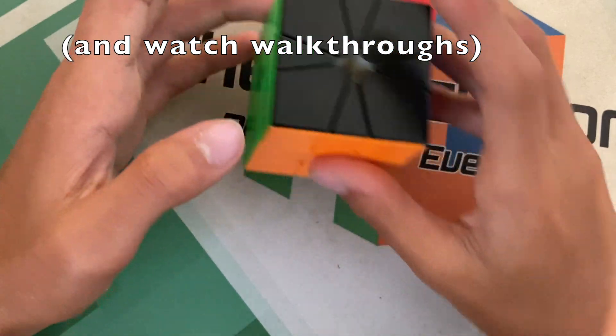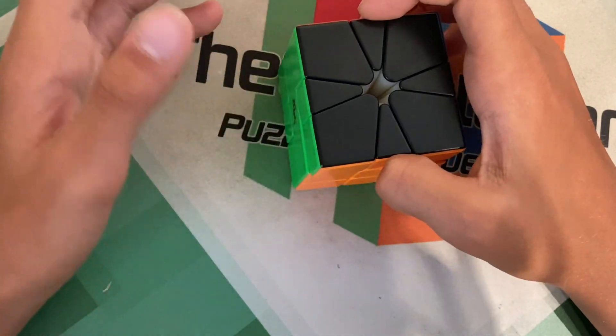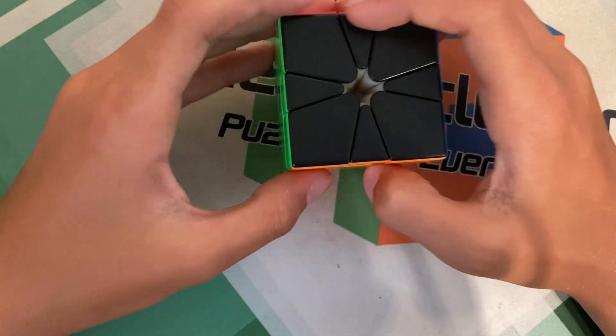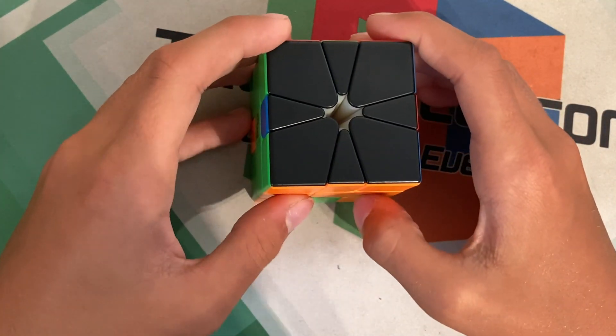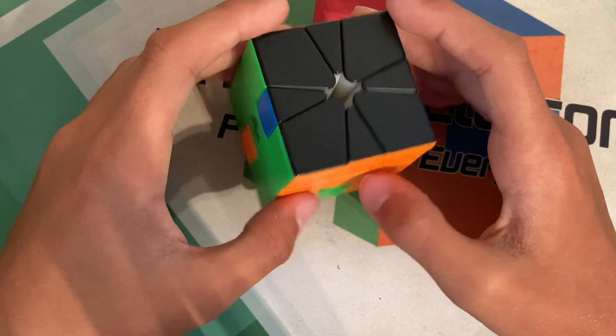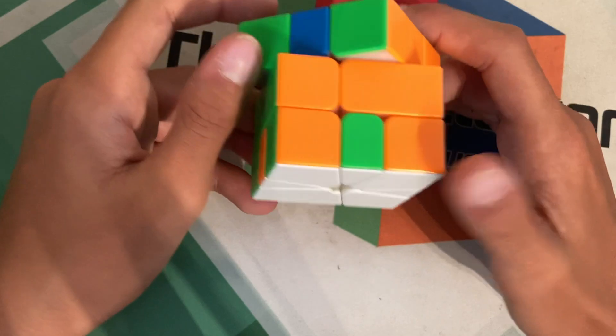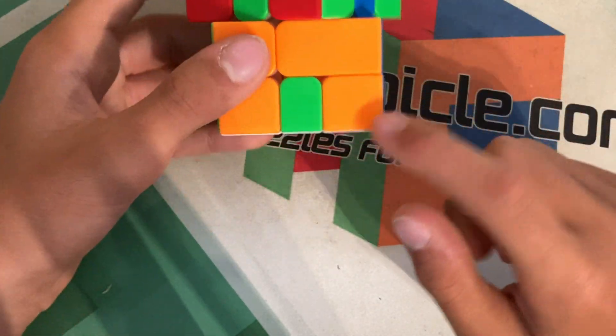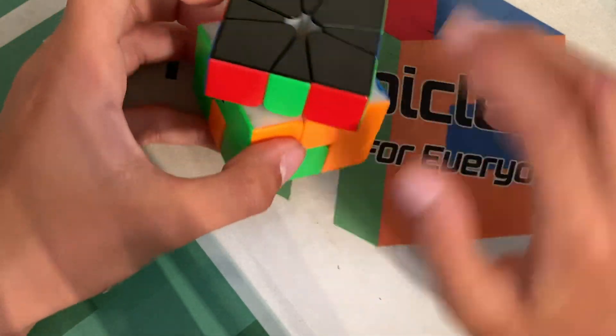Now for corner permutation and edge permutation, all you need to do is just learn full CP and intuitive EP. Now Cube Master has a great video on intuitive edge permutation, and basically what you do is you set up cases to adjacent-adjacent and solve the rest of the puzzle. Here is an example when you have a U perm on top and a Z perm on the bottom. You can do adjacent-adjacent from here where you have two swapped edges on the bottom, and it sets up to adjacent-adjacent like this.